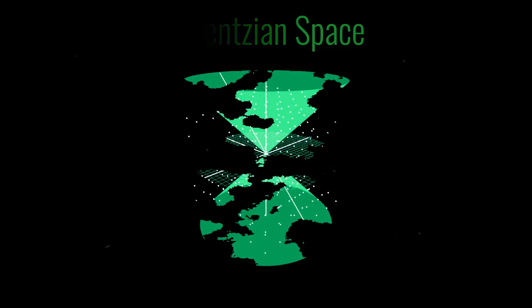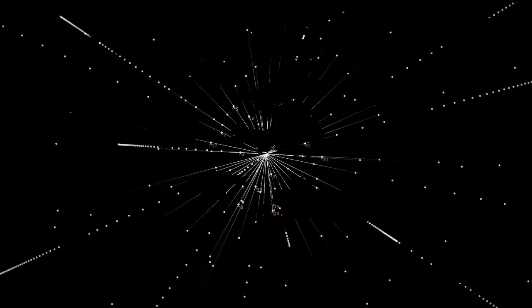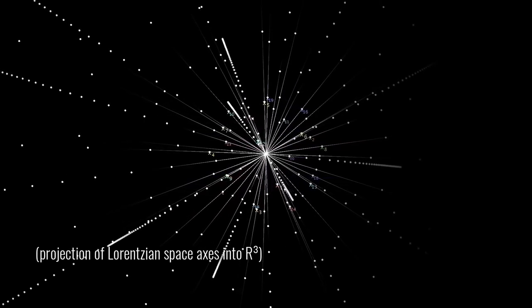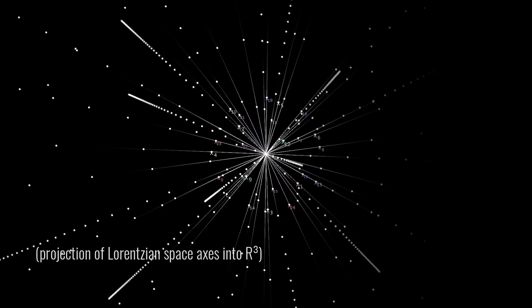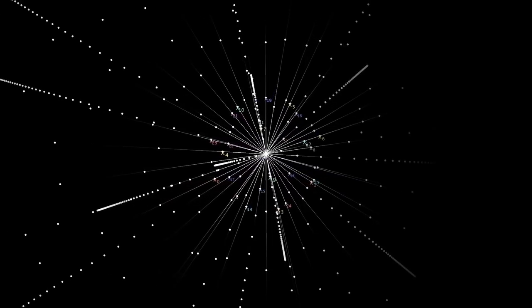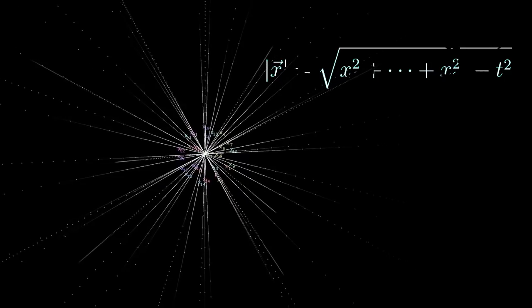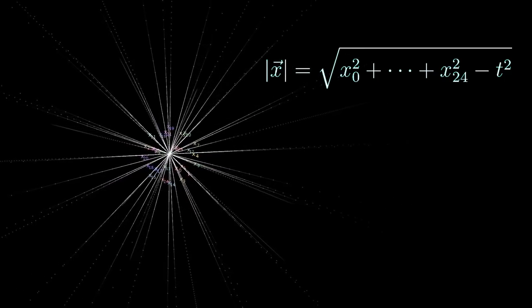I'm going to look at Lorentzian lattices in 26 dimensions. So this is coordinates x0, x1 up to x24 and then we've got a time-like vector t and the distance is going to be taking the square root of x0 squared plus x1 squared plus x24 squared minus t squared.